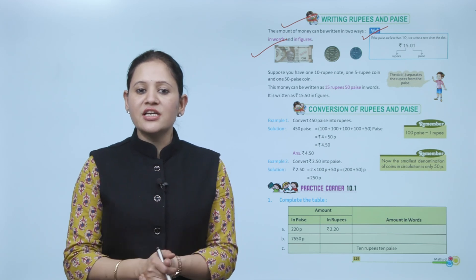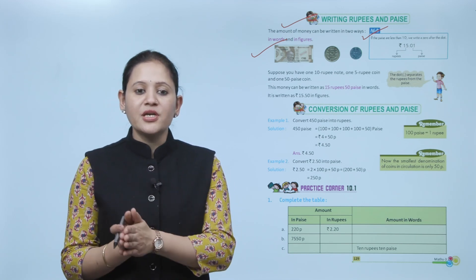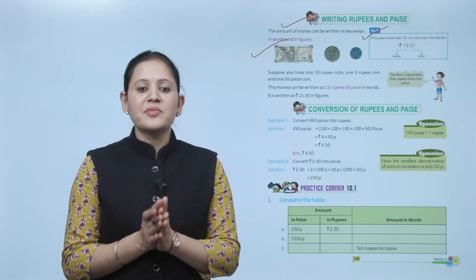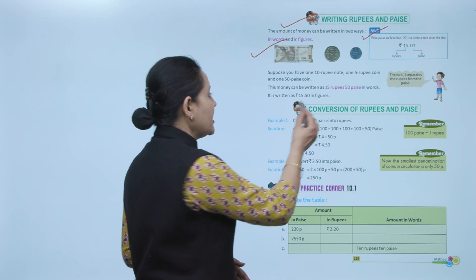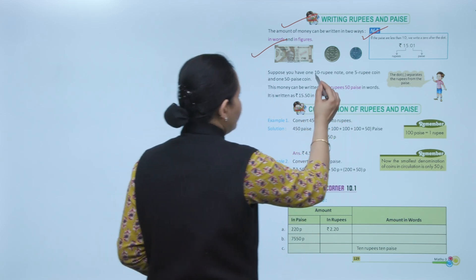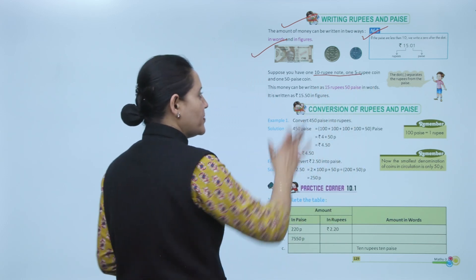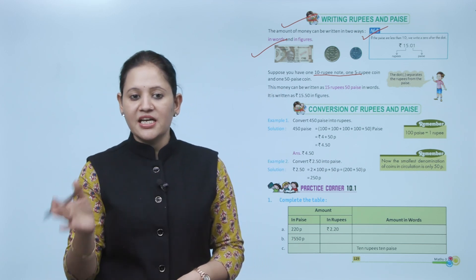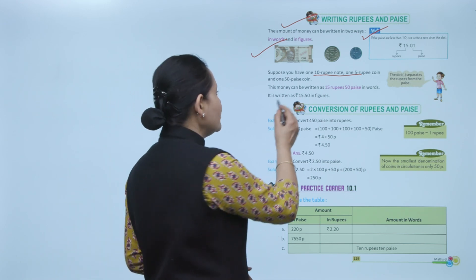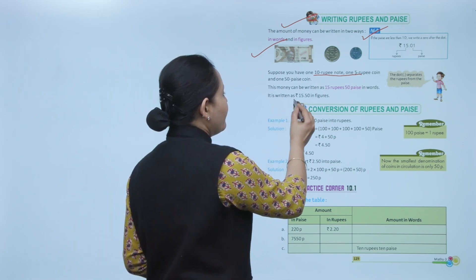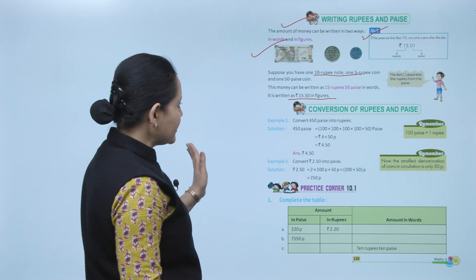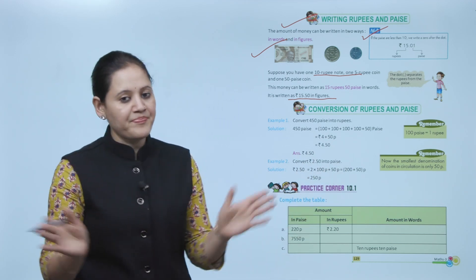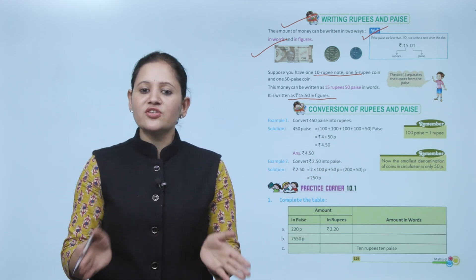Suppose you have a 10 rupee note, one 5 rupee coin, and one 50 paisa coin. The money can be written as 15 rupees 50 paisa. In figures you will write rupees 15.50. The number before the decimal means rupees and after the decimal means paisa. Next is conversion of rupees and paisa.